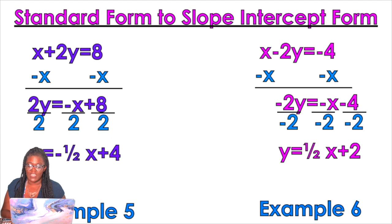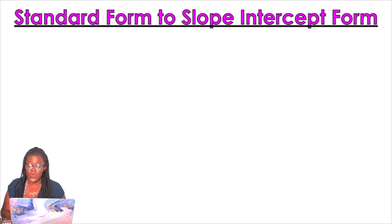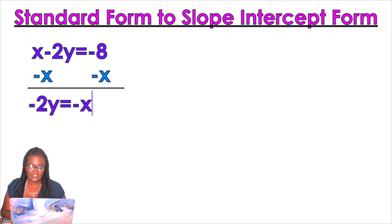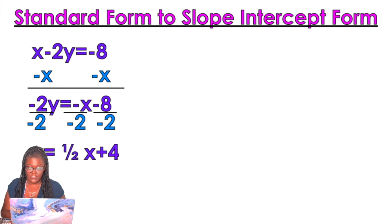Example 5 and example 6. More standard form to slope-intercept form. Why do we do this? Because it's such a valuable skill. So we're going to get rid of the x, divide by the coefficients. That's why I tell my students, get rid of the x, divide by the coefficient. All the time.